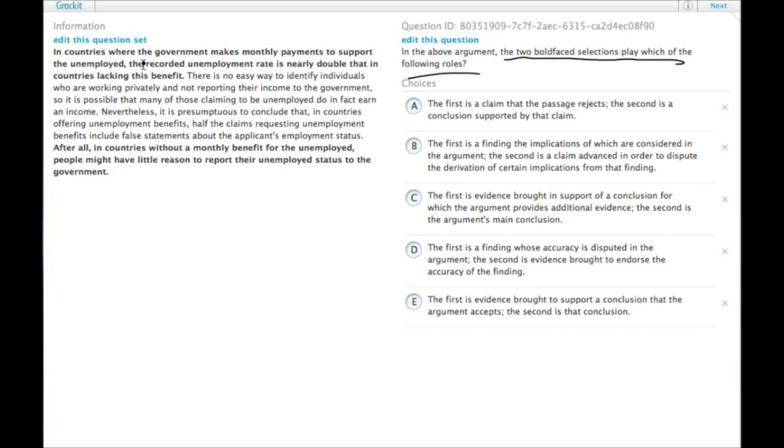So in countries where government makes monthly payments to support the unemployed, the recorded unemployment rate is nearly double that in countries lacking this benefit. So this is some kind of fact. What gets done with this fact? Let's keep reading. There is no easy way to identify individuals who are working privately and not reporting their income to the government. So it is possible that many of those claiming to be unemployed do, in fact, earn an income.